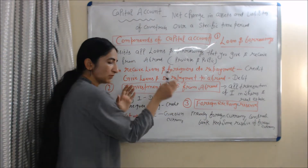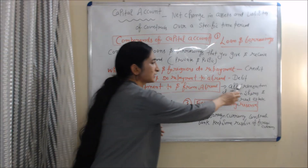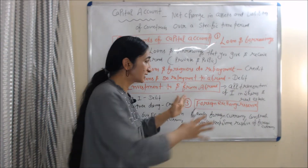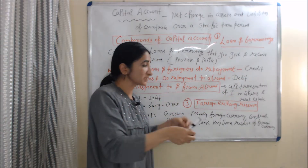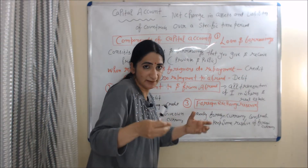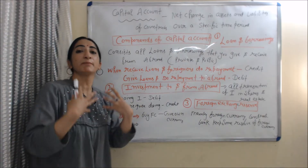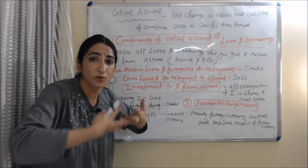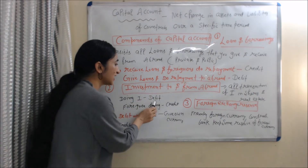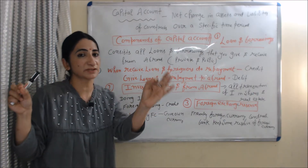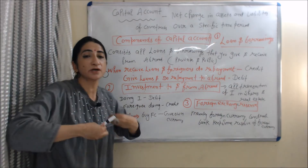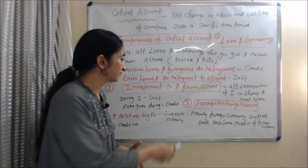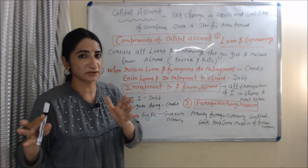The next component is investment to and from abroad. It includes all transactions of investment in shares and real estate. When you are doing investment abroad, money is going from your country, that is why it will come on the debit side of the balance of payment account. On the other hand, if foreigners are doing investment in your country, money is coming in, so it will come on the credit side of the balance of payment account.